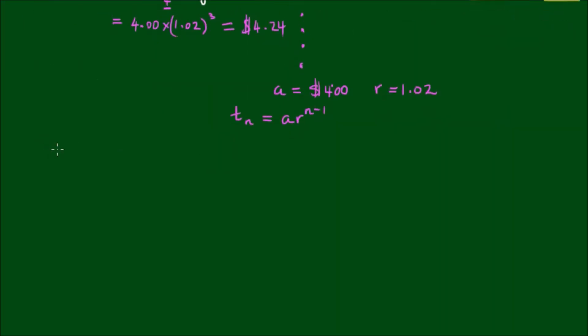So what about after 10 years? Following our formula, we have T10 equals A by r to the power of 9, which equals $4, our starting price, by the growth factor 1.02 to the power of 9, which equals $4.78.